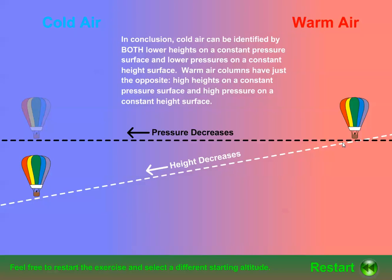So to reiterate, the fact that pressure decreases faster with increasing height in a cold air column than it does in a warm air column leads us to the important conclusion that cold air columns mark regions of lower heights on a constant pressure surface, while warm air columns mark regions of higher heights on constant pressure surfaces.